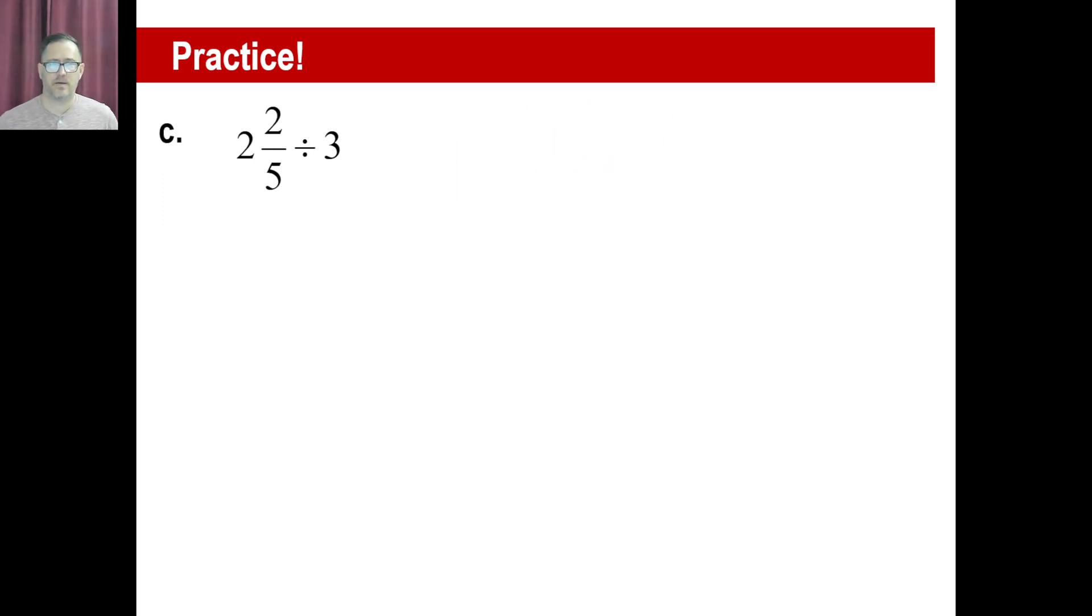Pause it and try C. Okay, well, if you kind of guesstimated, you could go, a little less than 3 divided by 3 is going to be a little less than 1. So 2⅖ is the same thing as 12/5. Divided by 3 over 1 means you multiply by 1 over 3. The 12 and the 3 cancel, that gives you 4, so your answer is 4/5, like we said, a little less than 1.